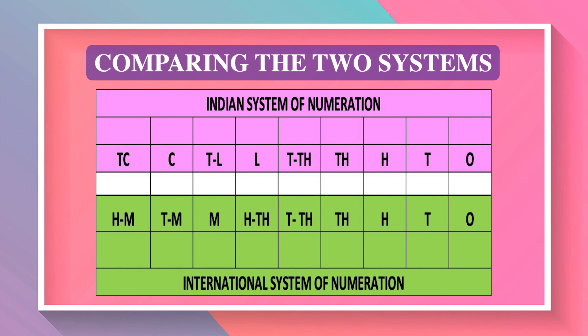So, 1 crore is equal to 10 lakhs. 1 million is equal to 10,00,000 (100,000). 1 crore is equal to 10 times 10 lakhs, also equal to 100 lakhs, equal to 10 times 1,000 times 10, equal to 100,000; and 1 crore is equal to 10,000 times 1,000.